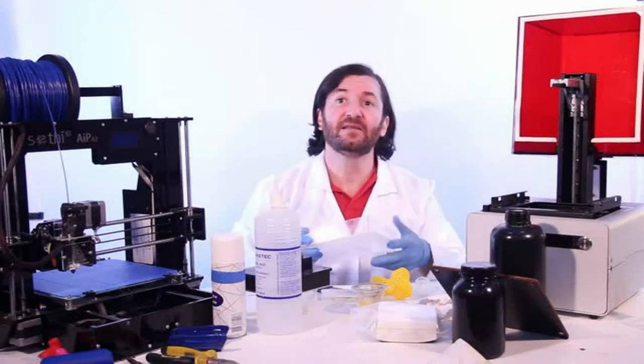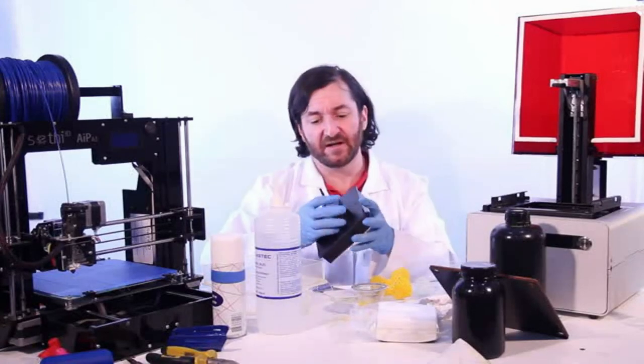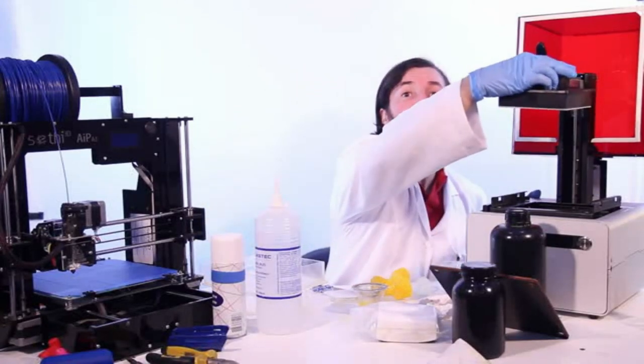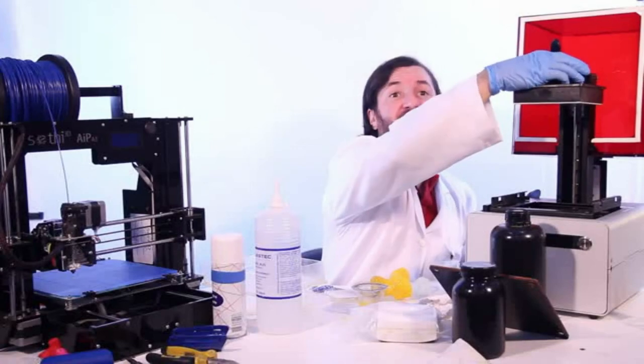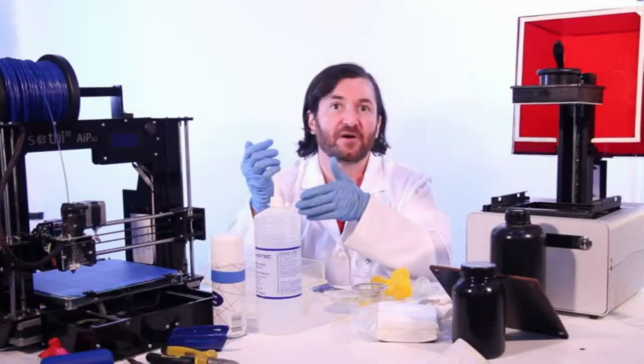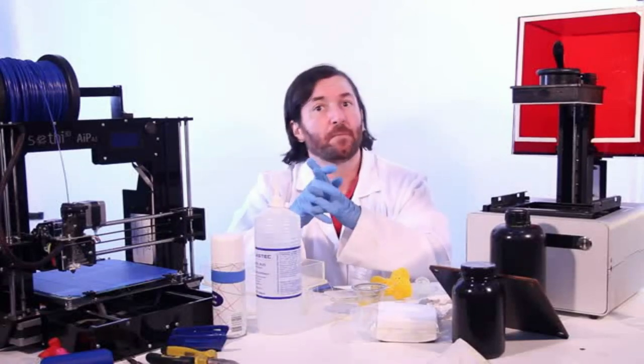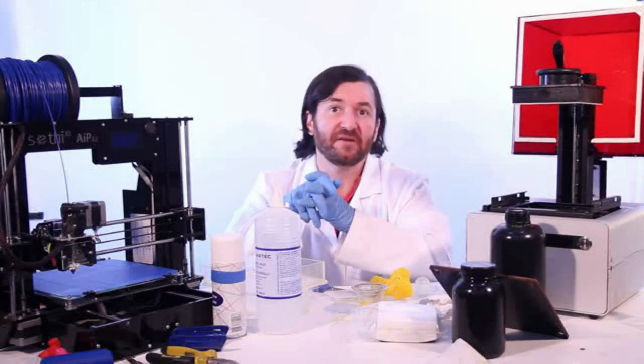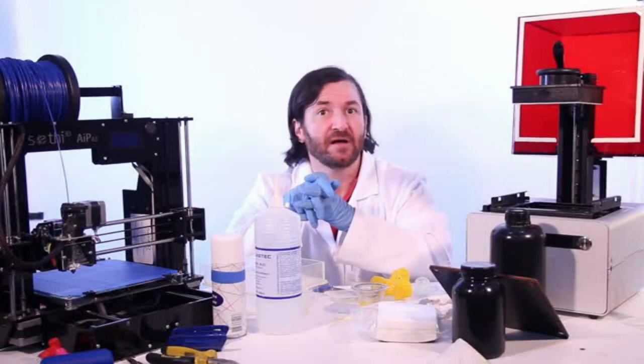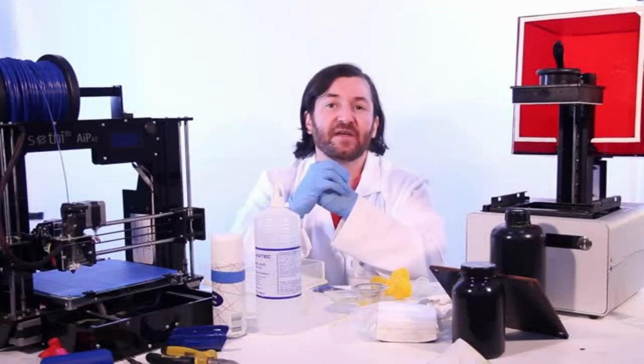You might have heard of the speedy Carbon 3D M1 SLA printer with an innovative technology which uses oxygen to prevent the layers from sticking to the bottom, saving the need for the time-expensive peeling motion and enabling the printing to be completely continuous. Some people even adapted the B9 Creator, leveraging from its open-source nature, of course, to use something like that.